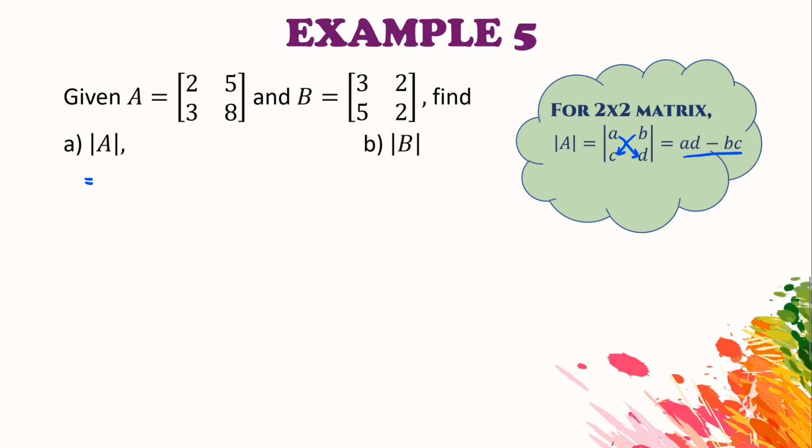So the determinant of A: first we write the elements in this vertical lines brackets. Now using the formula ad minus bc, we calculate the values: 2(8) - 5(3) = 16 - 15 = 1. As simple as that.